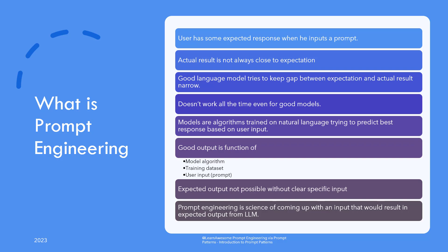While the model has been trained on petabytes of internet resources and has billions of parameters, it cannot generate your expected output until you provide it with clear, specific input. The art, or rather science, of coming up with an input that would result in the output expected by you is called prompt engineering.